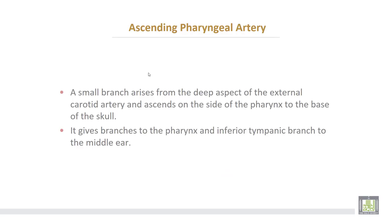The ascending pharyngeal is a small branch that arises from the deep aspect of the external carotid artery and ascends on the side of the pharynx to the base of the skull. It gives branches to the pharynx and the inferior tympanic branch to supply the middle ear.